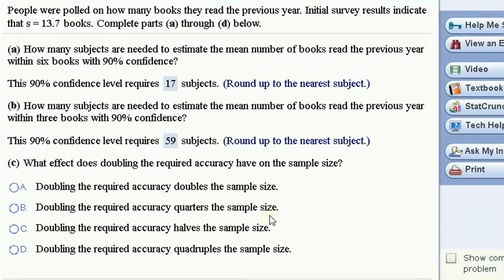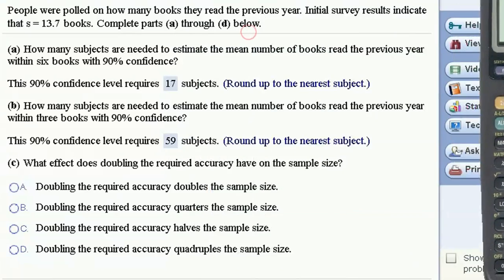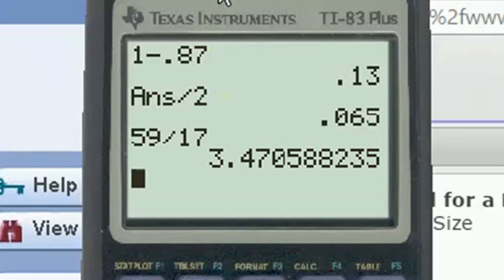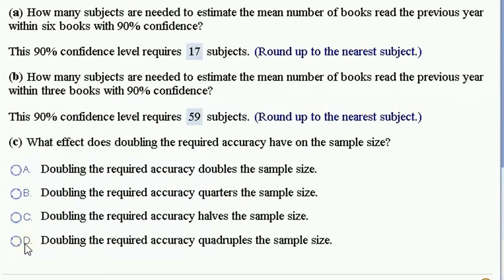What effect does doubling the required accuracy have on the sample size? Take a look at that. We go from 17 to 59. Let's just check in our calculator, see how much we've increased: 59 divided by 17. If you don't see it, it's not quite quadrupling. That's the closest that this has. That's the closest option that we have. It's approximately quadrupling. When we've rounded off to the nearest subject, it's not exactly quadrupling, but that's the closest that we have there.